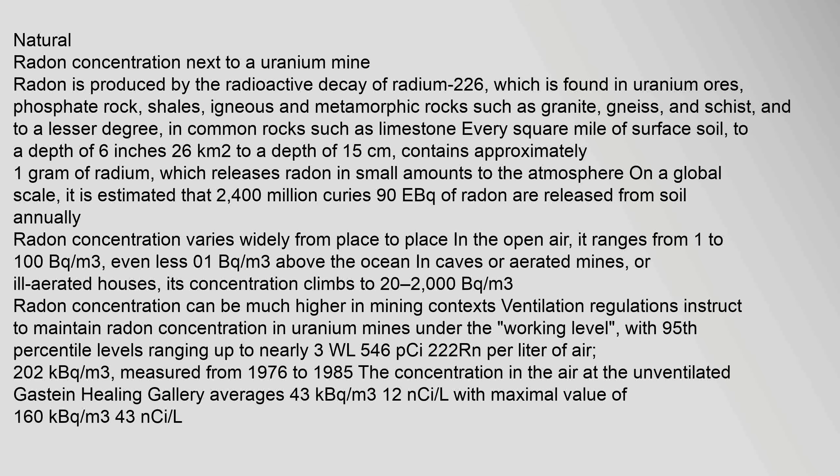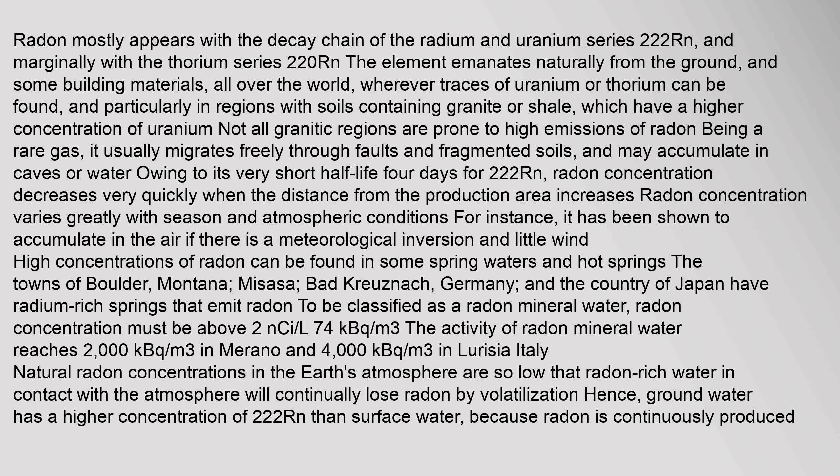Radon mostly appears with the decay chain of the radium and uranium series (222Rn) and marginally with the thorium series (220Rn). The element emanates naturally from the ground and some building materials all over the world wherever traces of uranium or thorium can be found, and particularly in regions with soils containing granite or shale. Being a rare gas, it usually migrates freely through faults and fragmented soils and may accumulate in caves or water. Owing to its very short half-life of four days for 222Rn, radon concentration decreases very quickly with distance from the production area.